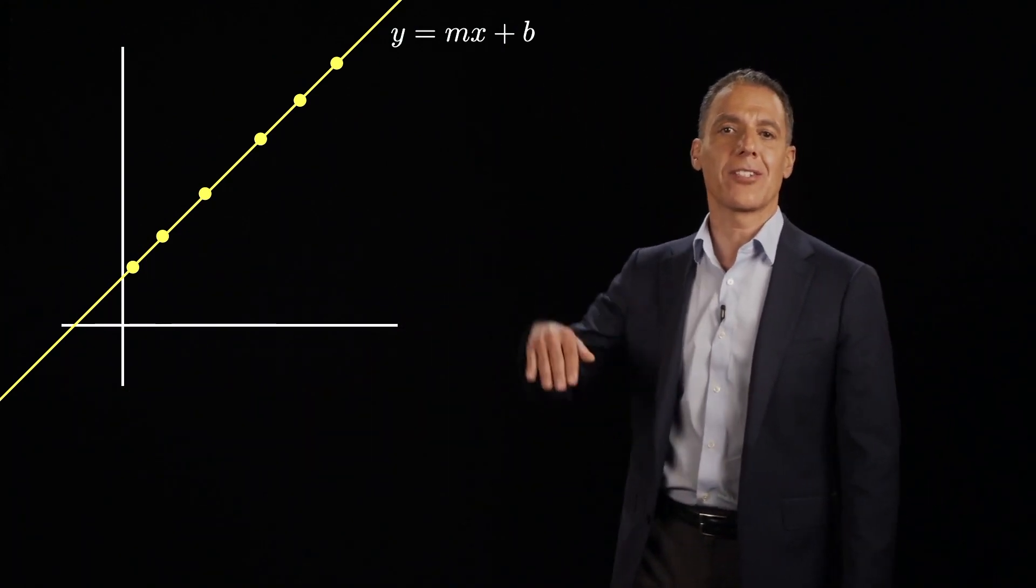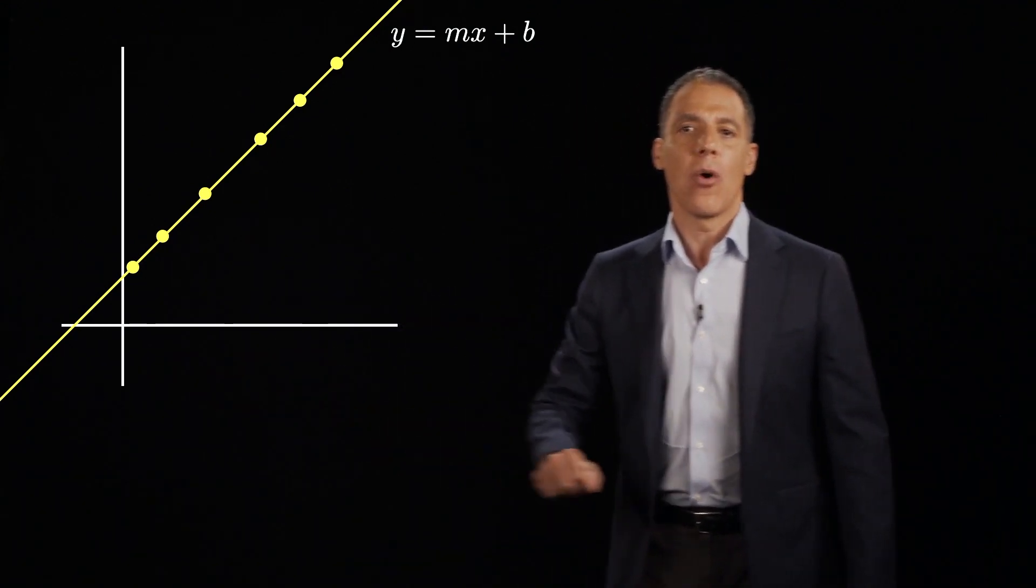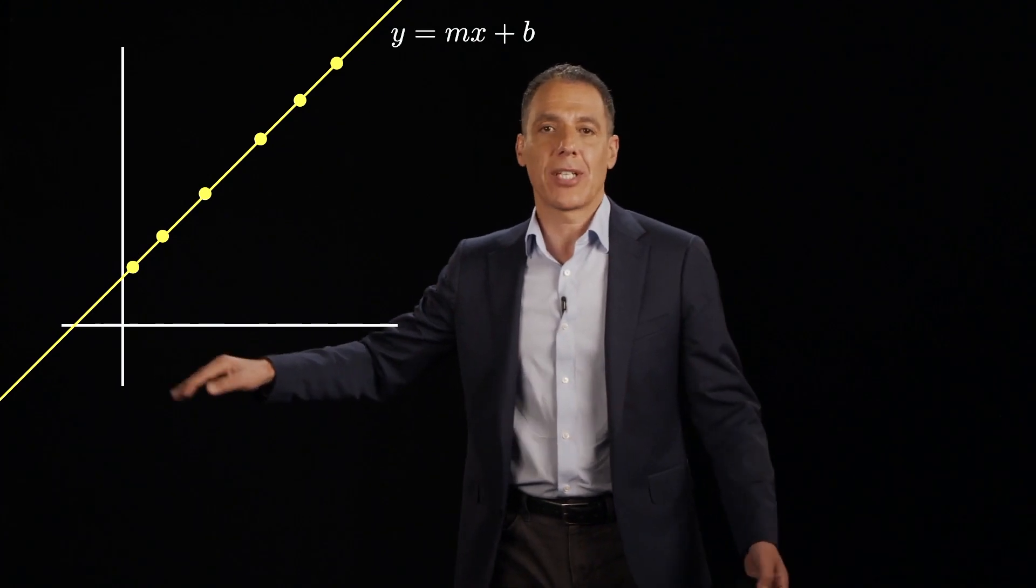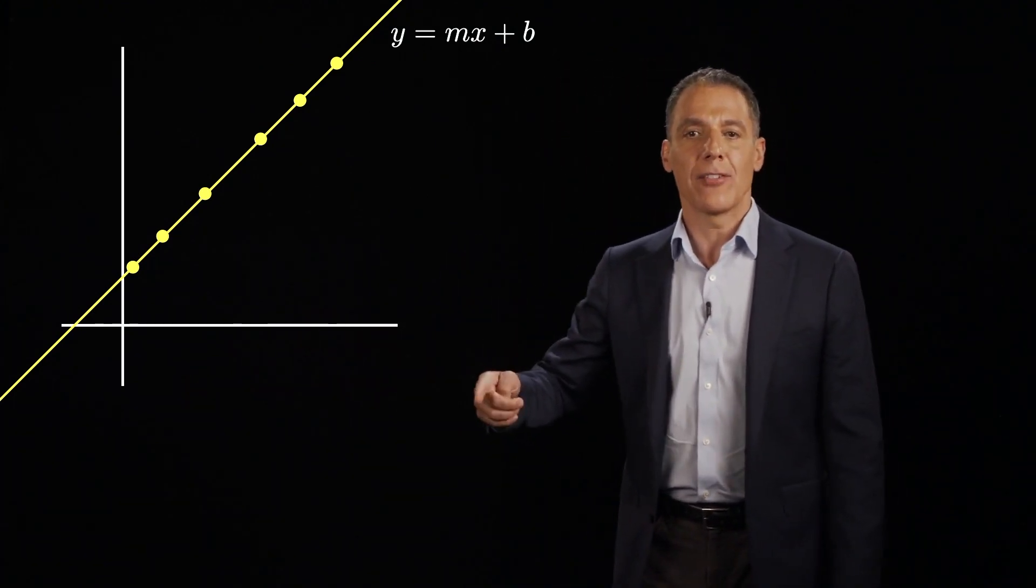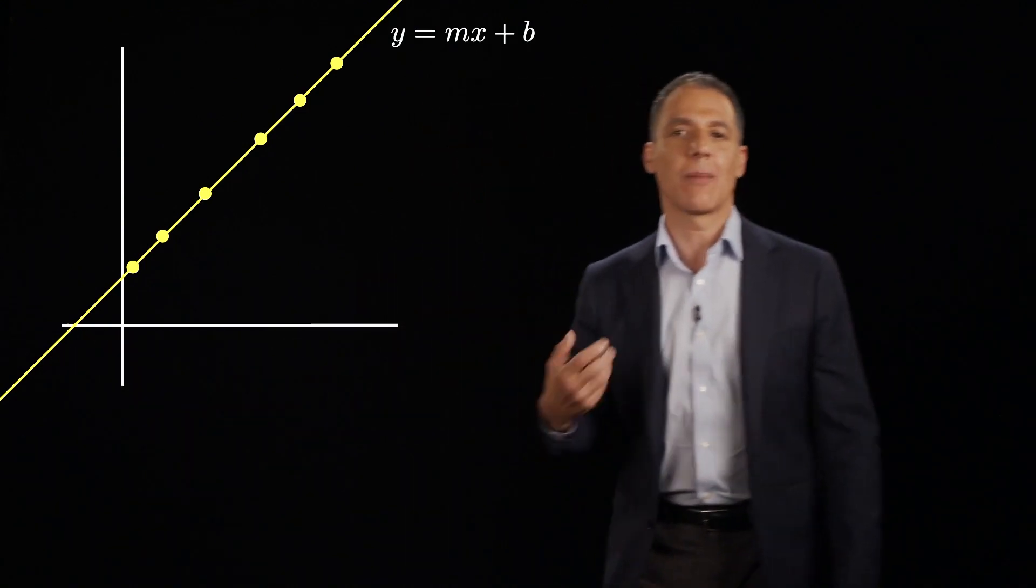Let's say you're trying to predict the stock market from how many tweets there are a day or from the temperature in a particular city, say in New York. So the vertical axis is the value of the stock market, and the horizontal axis is something you measure.